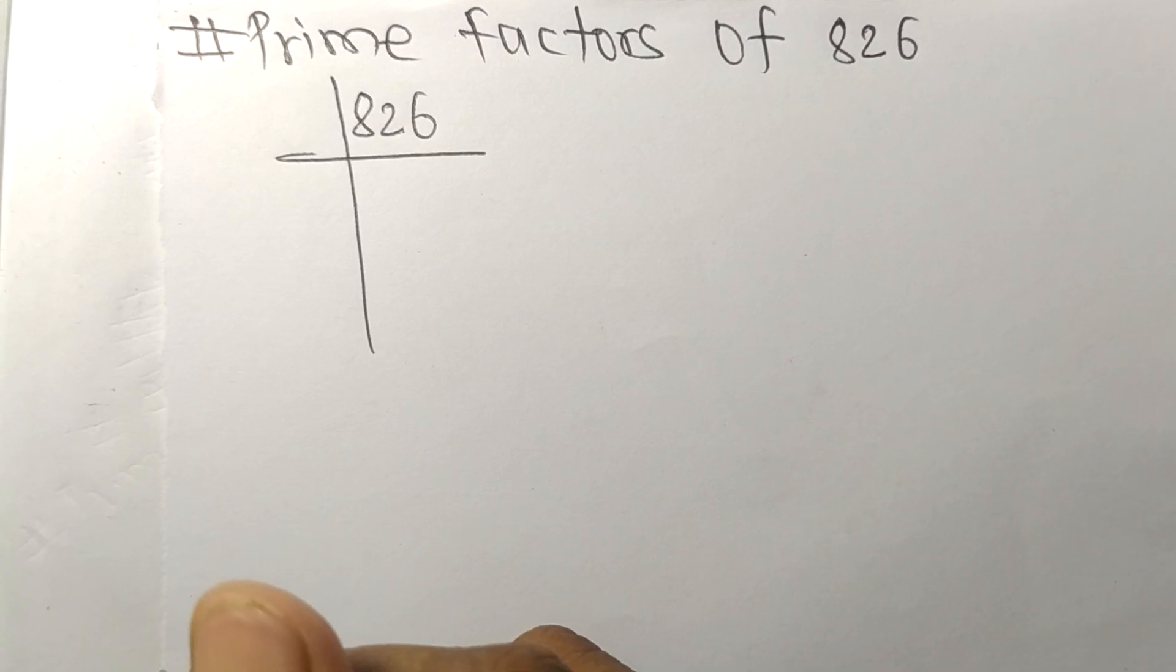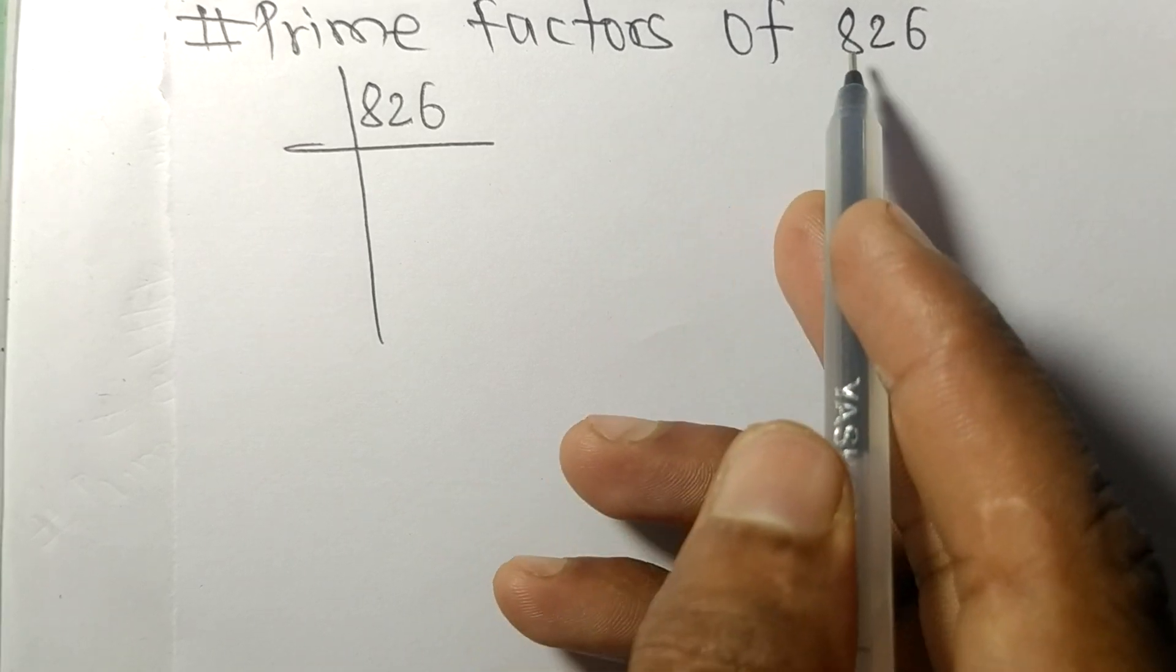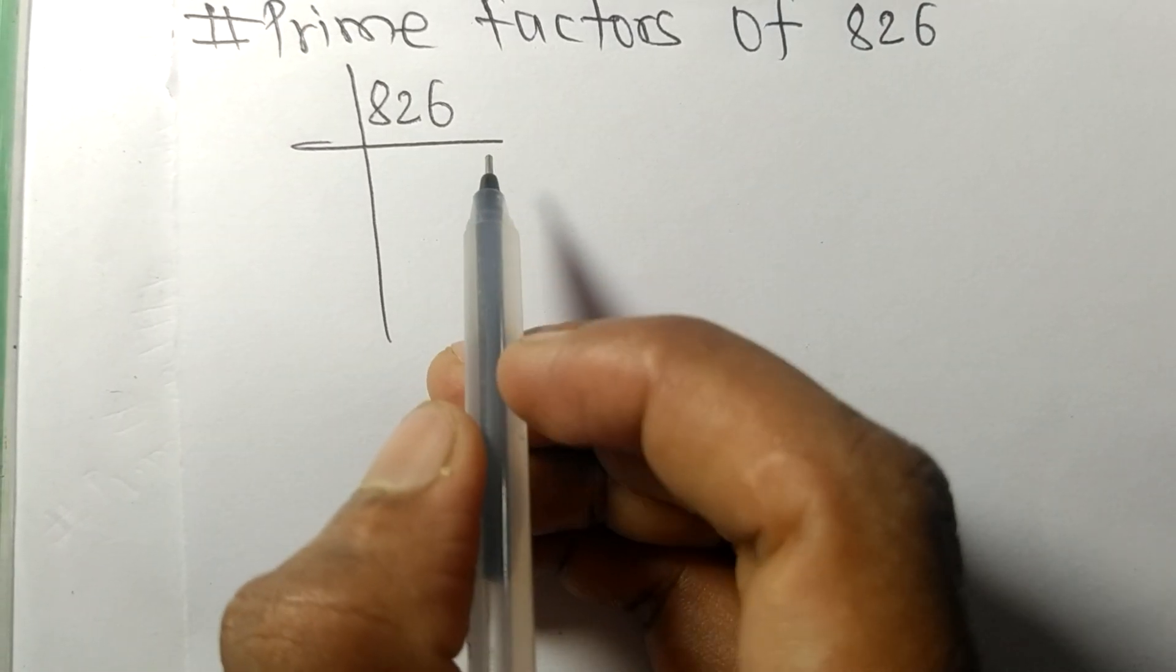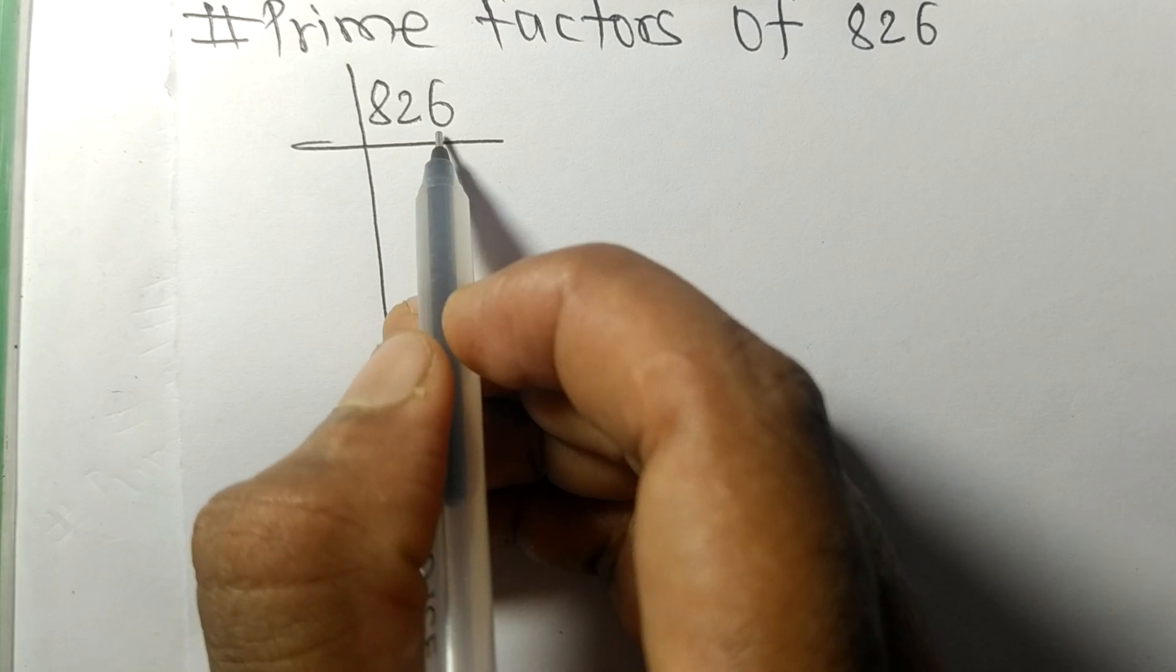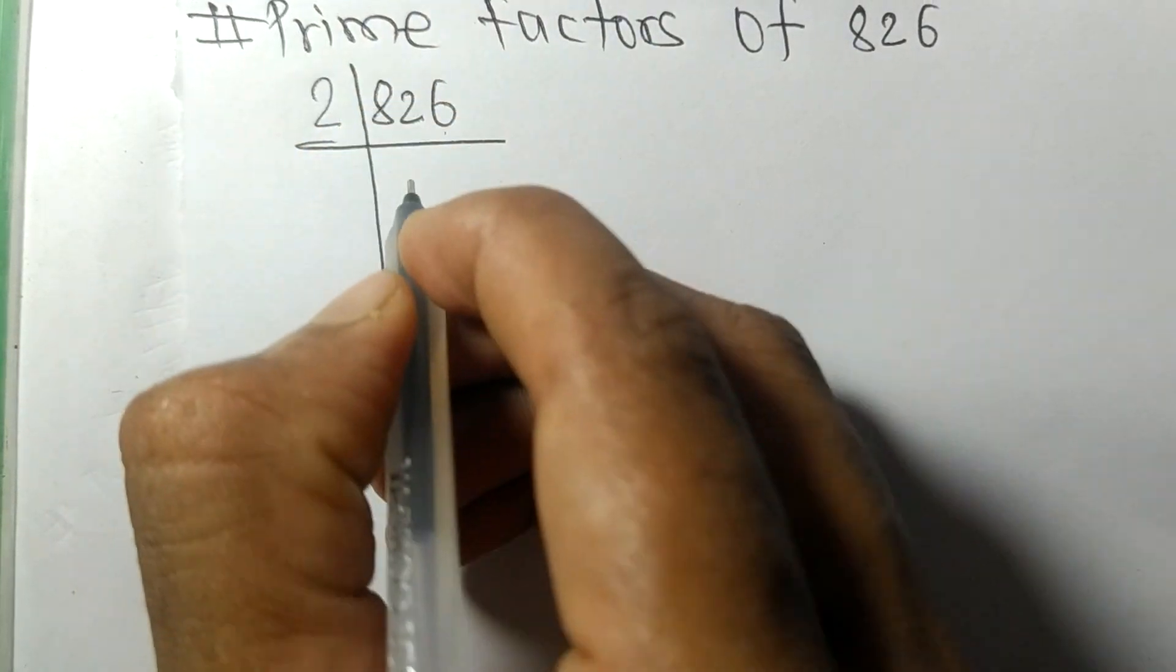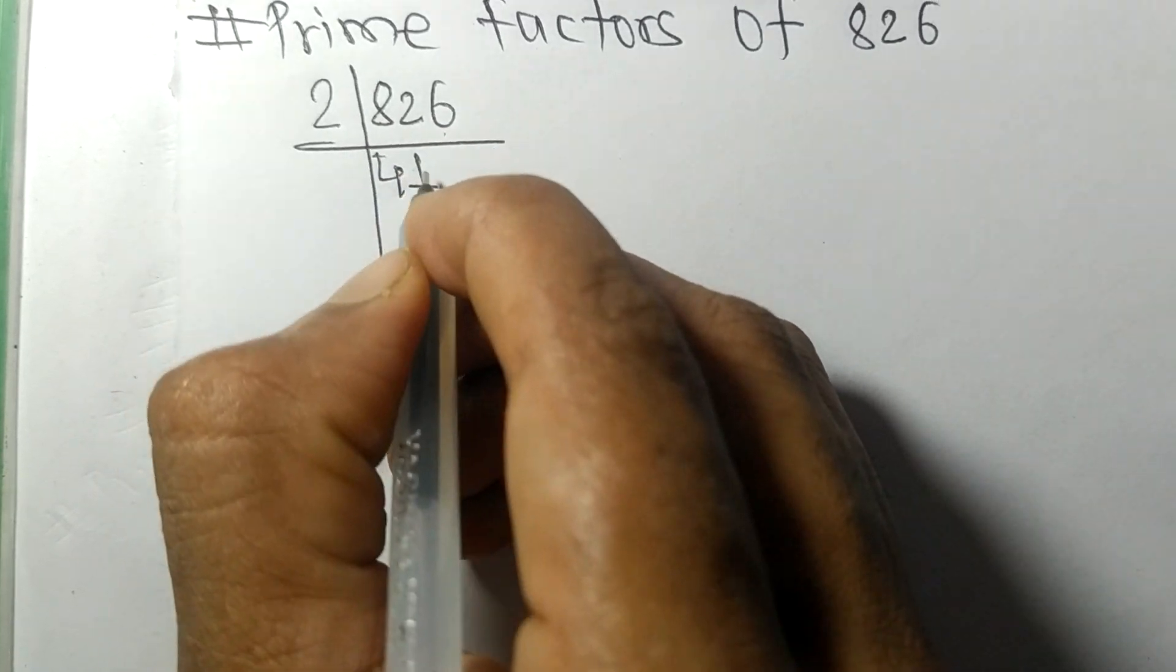So today in this video we shall learn to find the prime factors of 826. So at last it contains an even number 6, so this whole number is divisible by 2. 2 times 4 is 8, 2 times 1 is 2.